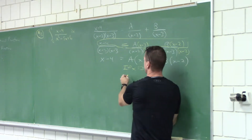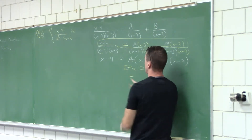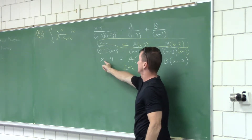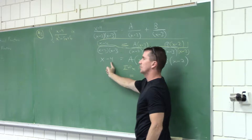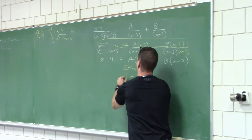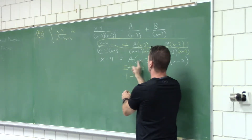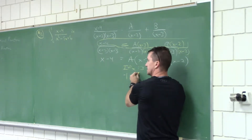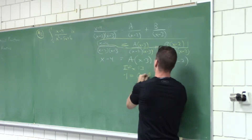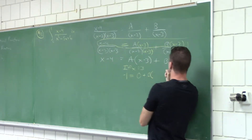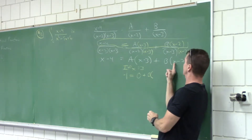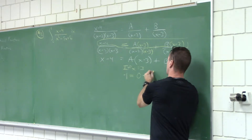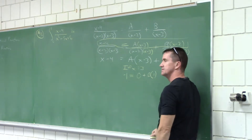What would happen to all this math? What would that side become? 3 minus 4 is negative 1. A times 3 minus 3 becomes 0. Then you have B times 3 minus 2, which is 1. We know what B is.